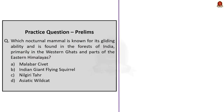Question 3: Which nocturnal mammal is known for its gliding ability and is found in the forests of India, primarily in the Western Ghats and parts of the Eastern Himalayas? As we saw in the discussion, the correct answer is option B — Indian giant flying squirrel.